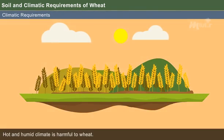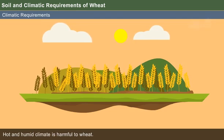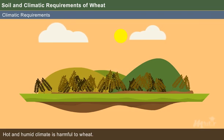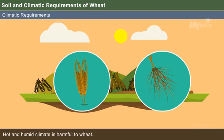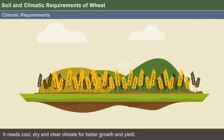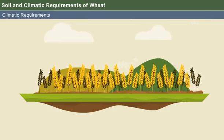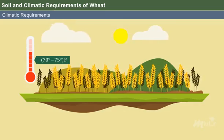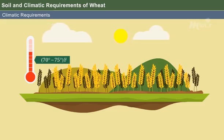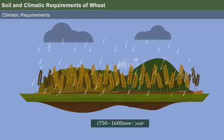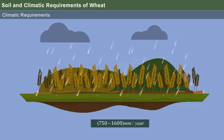Some of the climatic requirements of wheat are: hot and humid climate is harmful to wheat because it encourages the infestation of diseases such as rust, root rot, etc. It needs cool, dry, and clear climate for better growth and yield. The optimum temperature range for growth is between 70°F and 75°F. The rainfall requirement is 752 to 1,600 millimetres per year.